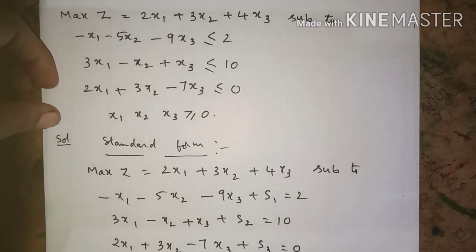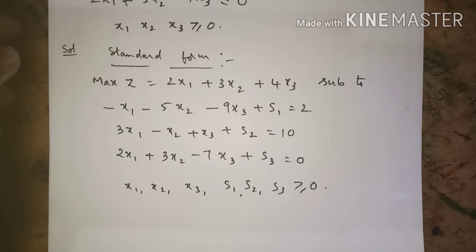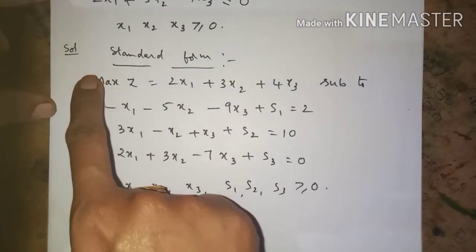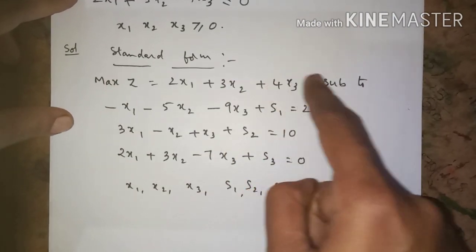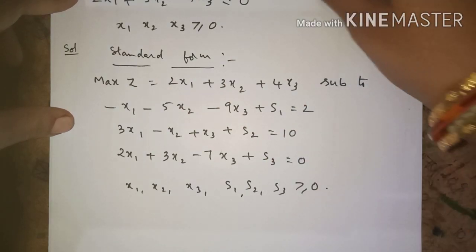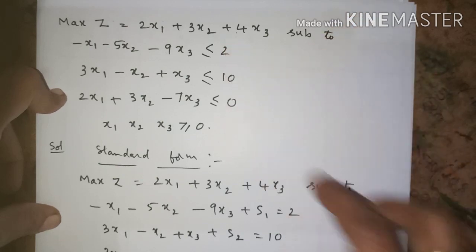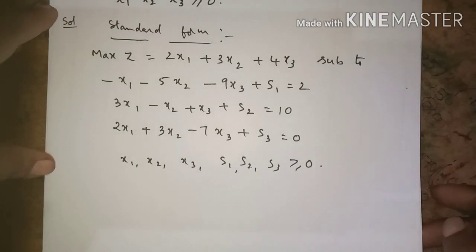Before starting the simplex method, we will convert the given problem into the standard form. To convert to standard form, first we check whether the objective function is maximization or minimization. If it is maximization type, no need to change it — we write max Z as given. All three constraints have less than or equal to symbols.